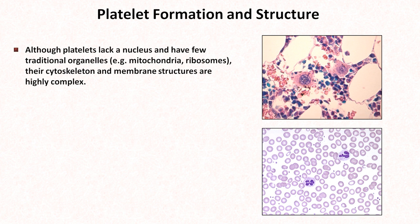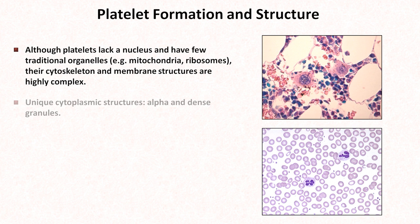Since they are cytoplasmic remnants, platelets lack a nucleus and have relatively few traditional organelles such as mitochondria and ribosomes. However, their cytoskeleton and membrane structures are highly complex. Platelets contain unique cytoplasmic structures called alpha and dense granules, which contain various compounds involved in platelet adhesion, activation, and aggregation, as well as the coagulation cascade.